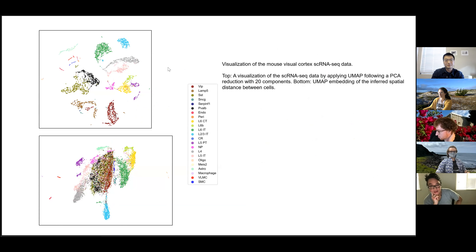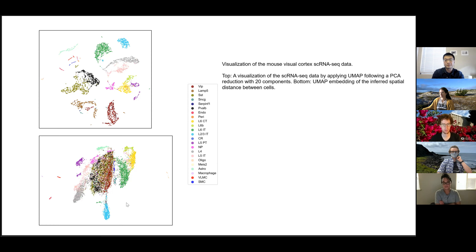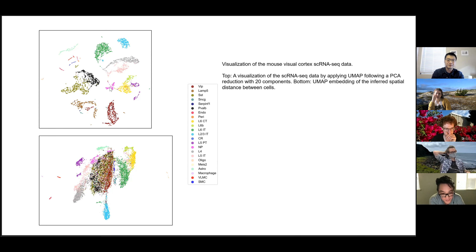Here's another example with a bigger dataset to show this works with large datasets. For the mouse visual cortex single-cell dataset, on top we have UMAP visualization of single cells using gene expression similarity. On the bottom, we have UMAP visualization using the inferred spatial distance between cells. Even with UMAP visualization, it shows the layer arrangement from L2 to L4, L5, and L6. We have prior knowledge that certain cell types are mixed together in space, and the spatial-distance UMAP reveals that observation, unlike the gene-expression-space UMAP.